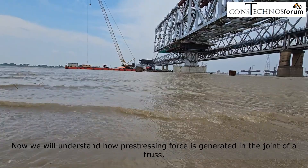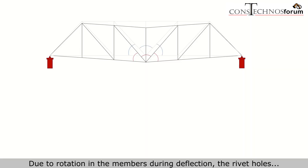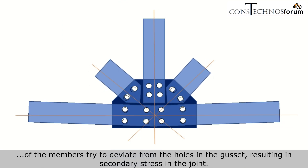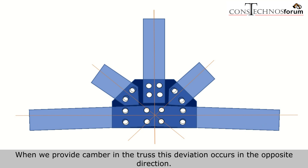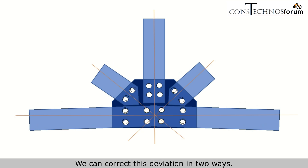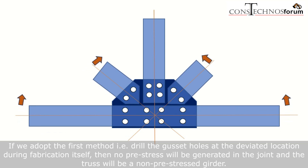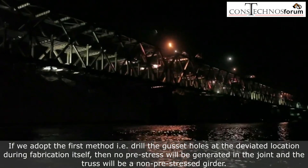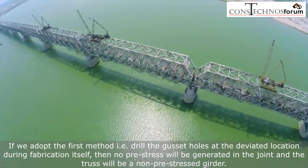Now we will understand how pre-stressing force is generated in the joint of a truss. Due to rotation in the members during deflection, the rivet holes of the members try to deviate from the holes in the gusset, resulting in secondary stress in the joint. When we provide camber in the truss, this deviation occurs in the opposite direction. We can correct this deviation in two ways: either we drill the gusset holes at the deviated locations during fabrication itself, or rotate the members during erection to match the holes made in the gusset. If we adopt the first method — drilling the gusset holes at the deviated location during fabrication — then no pre-stress will be generated in the joint and the truss will be a non-pre-stressed girder.